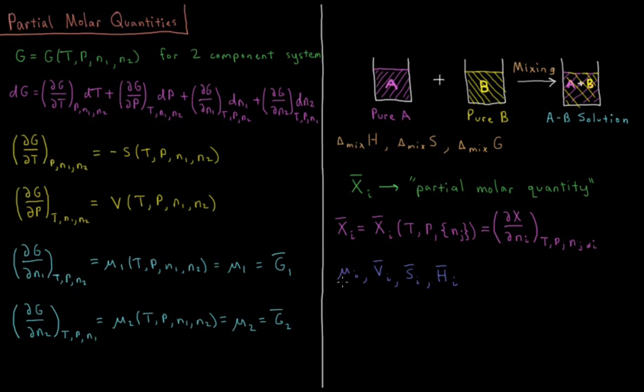Examples of partial molar quantities include the chemical potential, the partial molar Gibbs energy, the partial molar volume, partial molar entropy, and partial molar enthalpy — all of which we'll examine in detail in this chapter on liquid-liquid solutions.